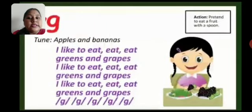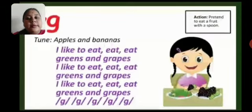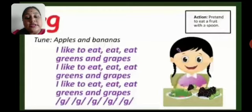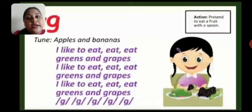Now I will tell you what is the sound of G. The sound of alphabet G is G. And now let's start learning the phonics song of G. Pahle mein aapko bataati hoon, then you have to repeat the song. I like to eat, eat, eat greens and grapes. I like to eat, eat, eat greens and grapes. I like to eat, eat, eat greens and grapes. G-g-g-g-g-g-g-g.